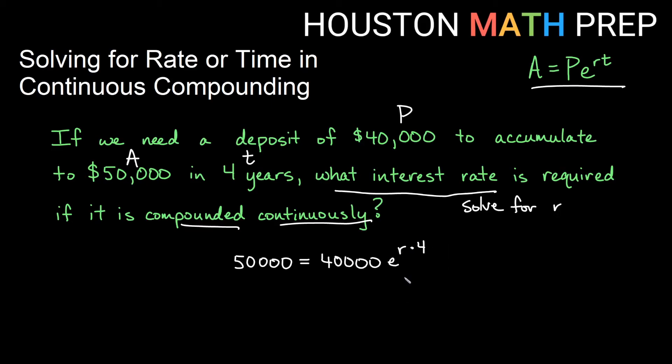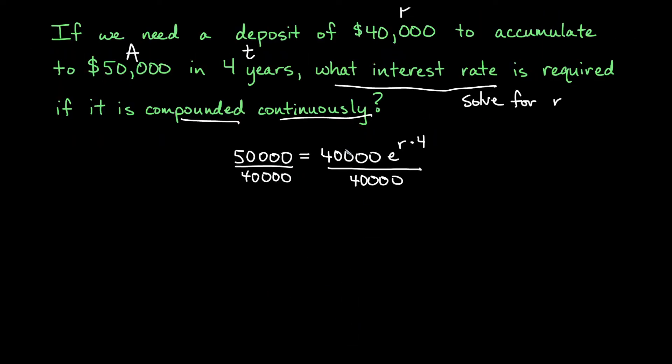We need our exponential by itself first. Let's go ahead and get rid of this times 40,000. We'll divide by 40,000. We're dividing by 40,000. You know, in the last one, I didn't simplify my fraction. I'm at least going to go ahead and take off my zeros here. Okay, we can at least do that so it's less writing.